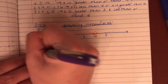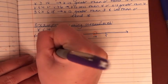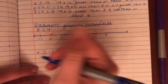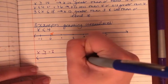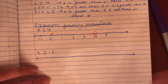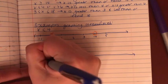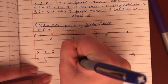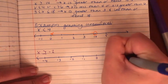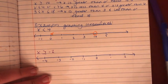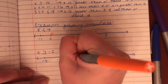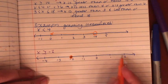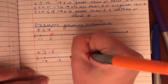Next one: X is greater than or equal to negative two. Let's draw a number line: negative four, negative three, negative two, negative one, zero, one, two. Since it can be equal to, we're going to put a closed circle above the negative two. Then since it's greater than, we draw an arrow going in the direction of numbers bigger than negative two.